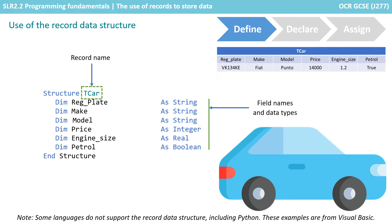Because Python doesn't support the record structure, the example code we're showing here is from Visual Basic. Don't get too worried about the actual code — we're just getting you to understand the record data structure that's available in many languages. You can see we've declared the record structure and given it a name, tcar, and then simply listed all the variables that this record structure will contain. We've listed the name of those variables, stated the data types, and then written end structure to tell the program that's the end of our record definition.